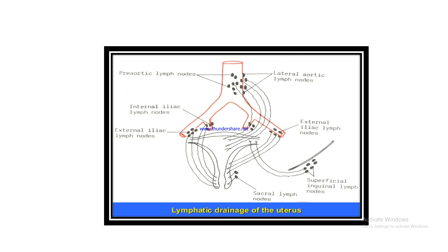Lymphatic drainage of the uterus: the diagram shows the para-aortic lymph nodes, lateral aortic lymph nodes, internal iliac lymph nodes, external iliac lymph nodes, superficial inguinal lymph nodes, sacral lymph nodes — the lymph node names generally correspond to the vessel names in the region.